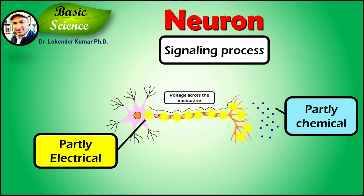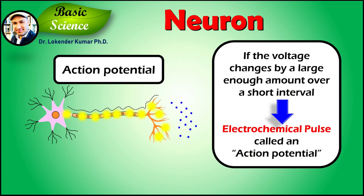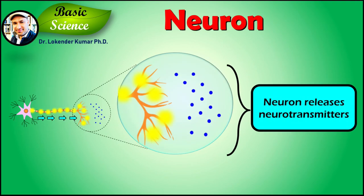Now let's discuss the signal process itself. The signal process is partially electrical and partially chemical. Neurons are electrically excitable due to the maintenance of voltage gradients across their membranes. If the voltage changes by a large enough amount over a short interval, the neuron generates an electrochemical pulse called an action potential. This action potential travels rapidly along the axon and activates synaptic connections as it reaches them.